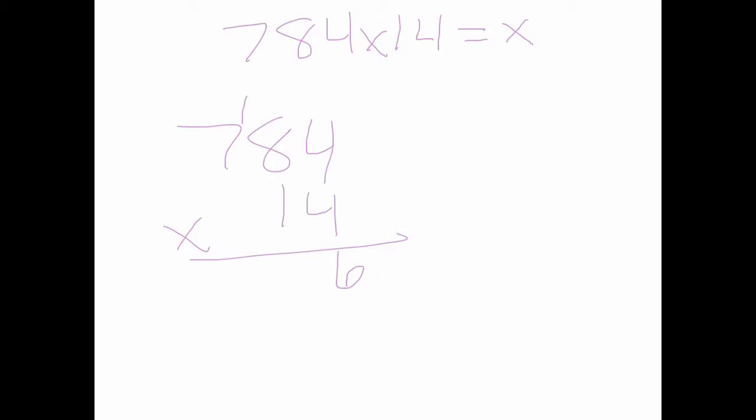So, 8 times 4 equals 32, plus 1 equals 33. Regroup. 7 times 4 equals 28, plus 3 equals 31.